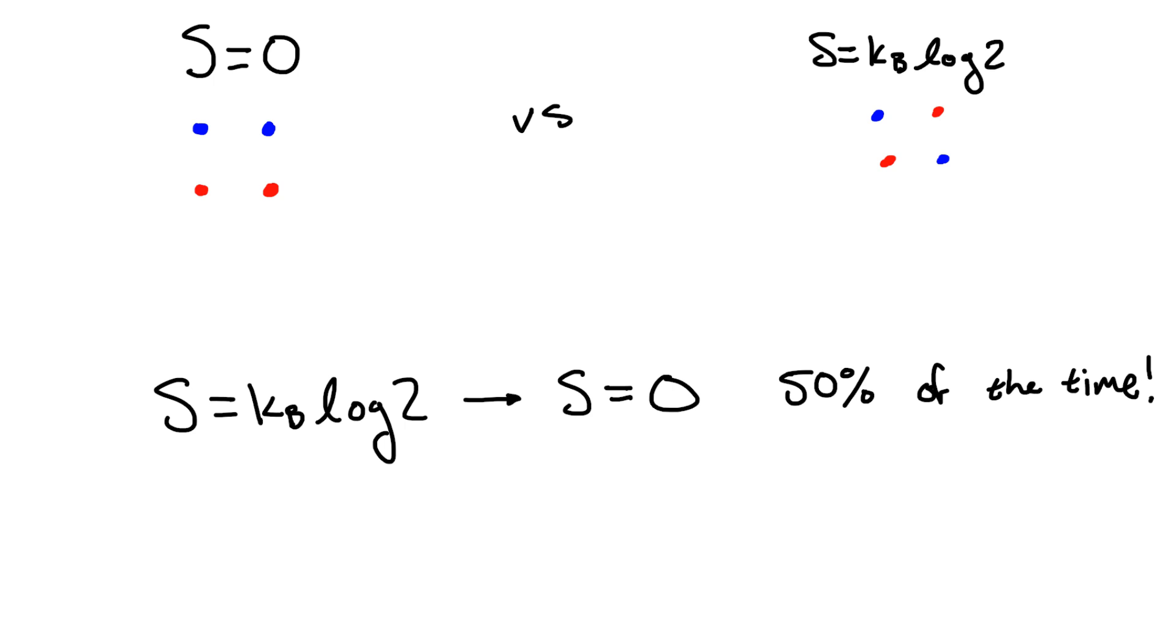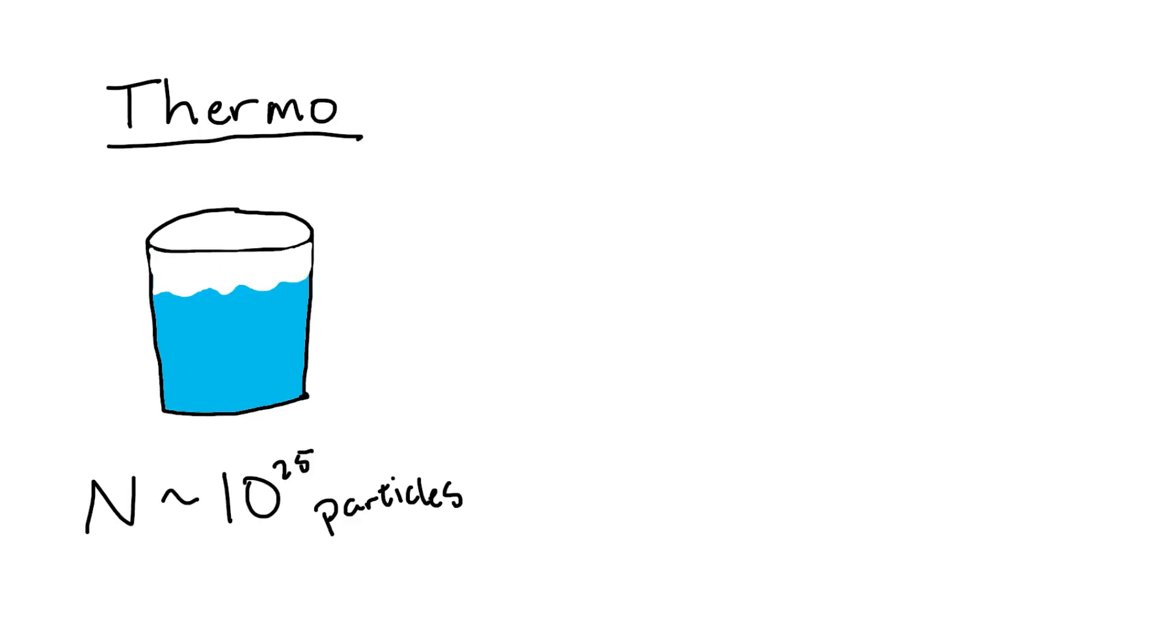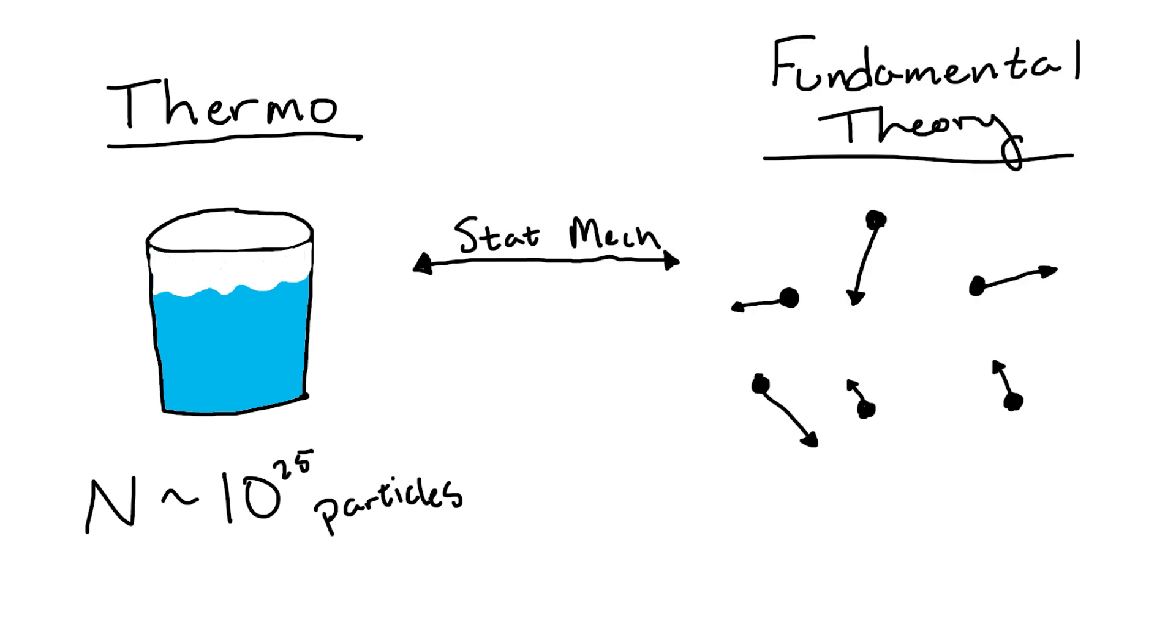Well we have to remember that statistical mechanics, which is what we used for this two-particle system, is not the same thing as thermodynamics. Thermodynamics is concerned with very large-scale systems such as fluids or gases with 10 to the 20-some particles in them, whereas statistical mechanics is meant to bridge the gap between the exact physical models and these large-scale systems where the exact calculations become impossible.